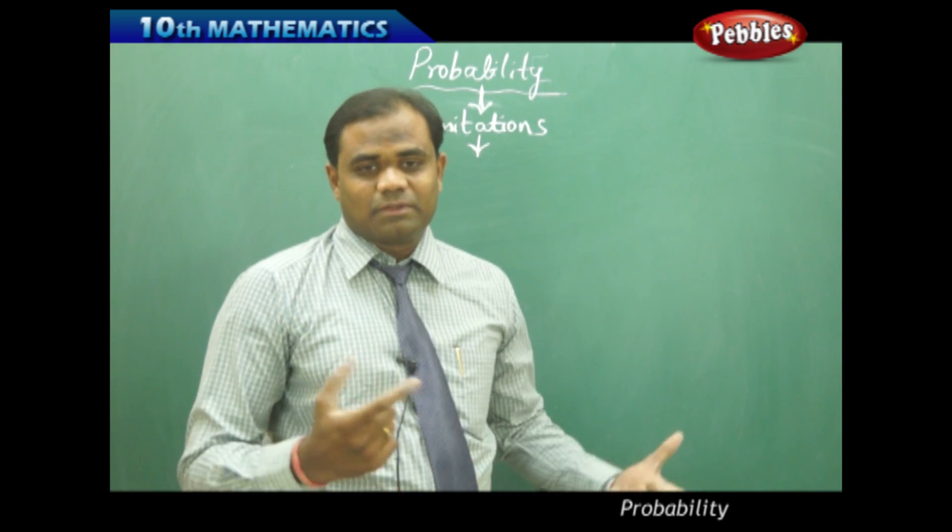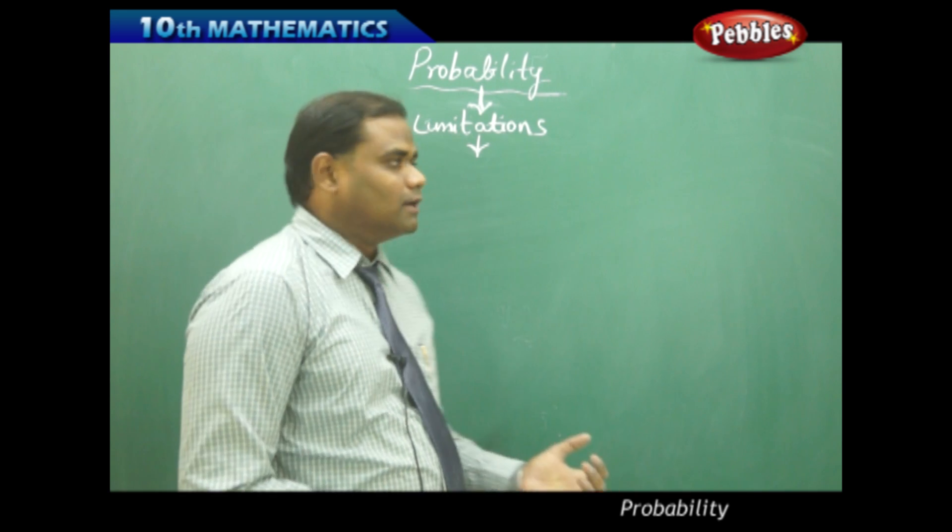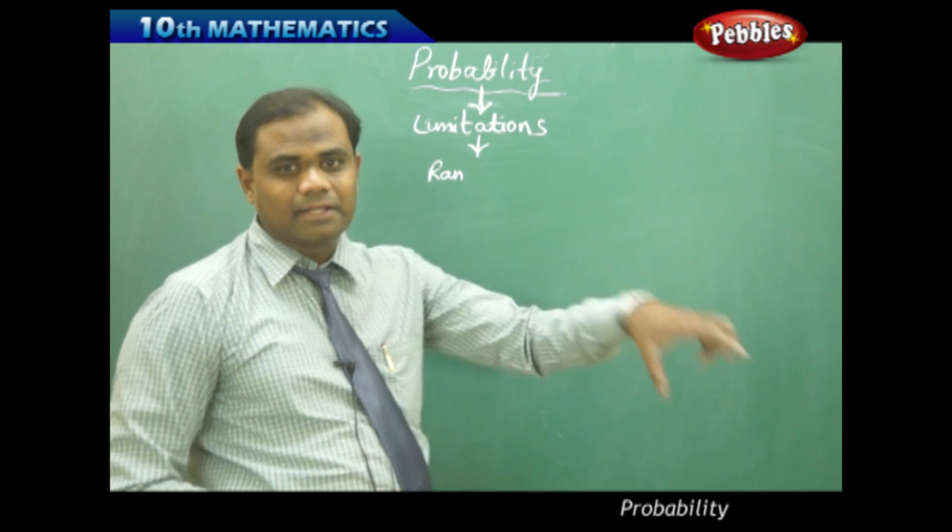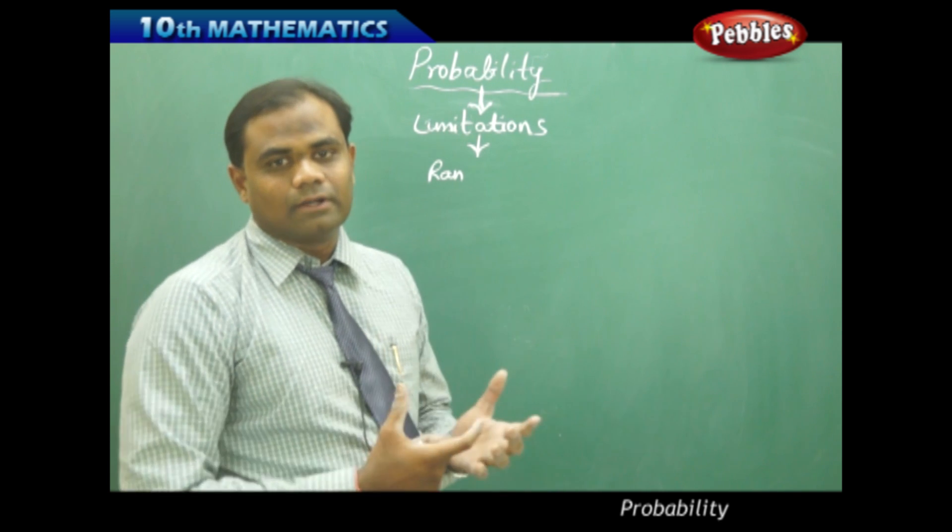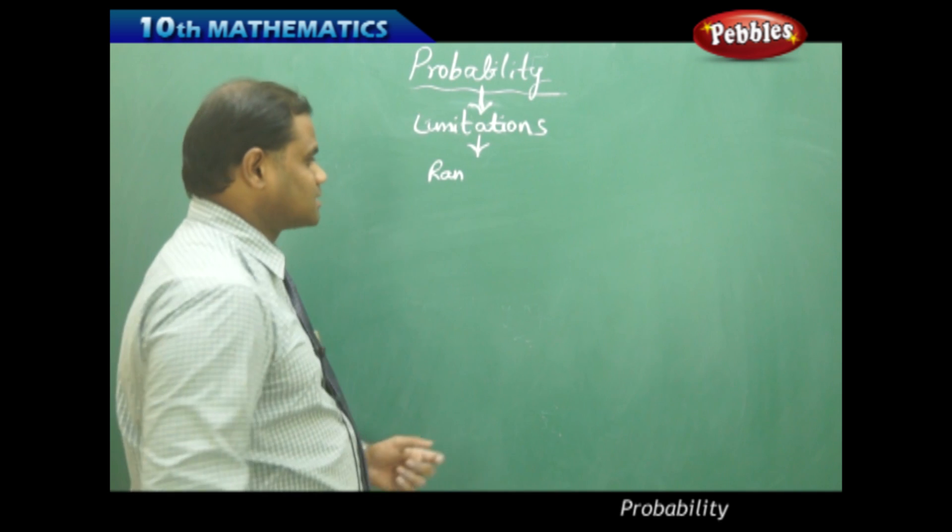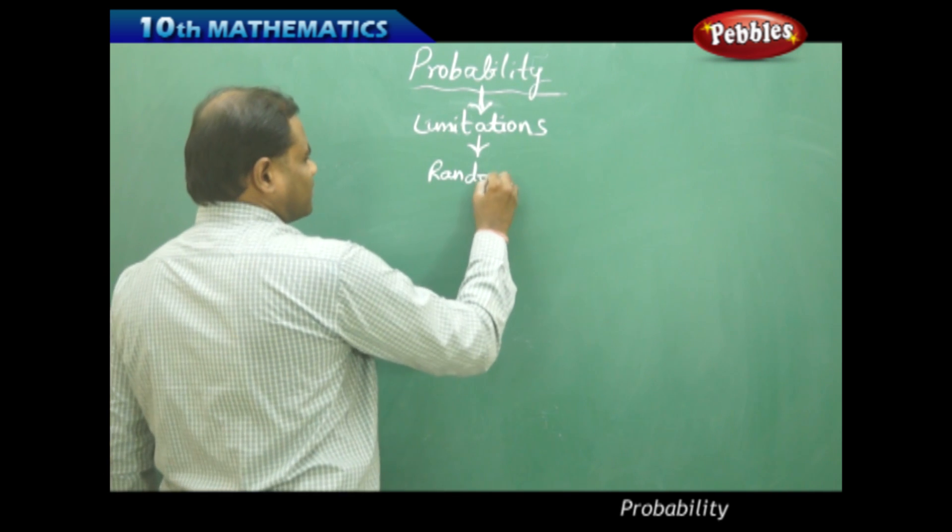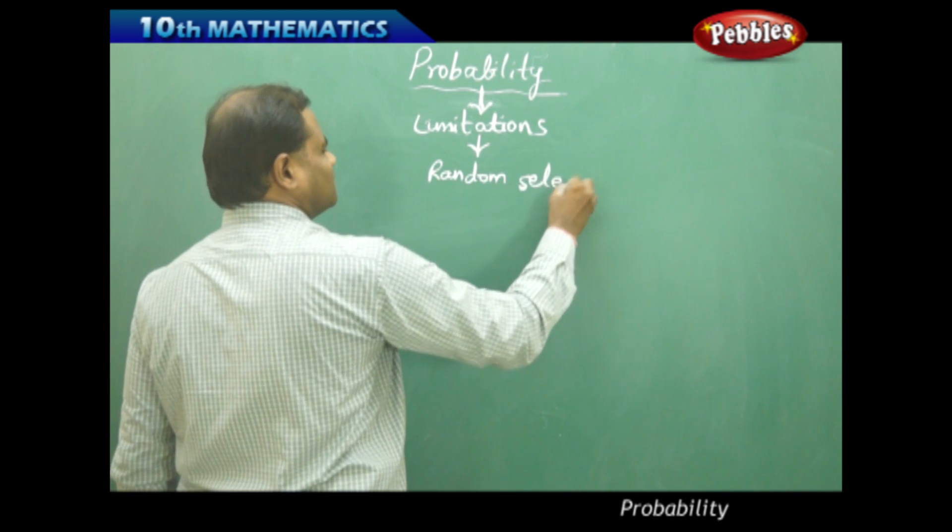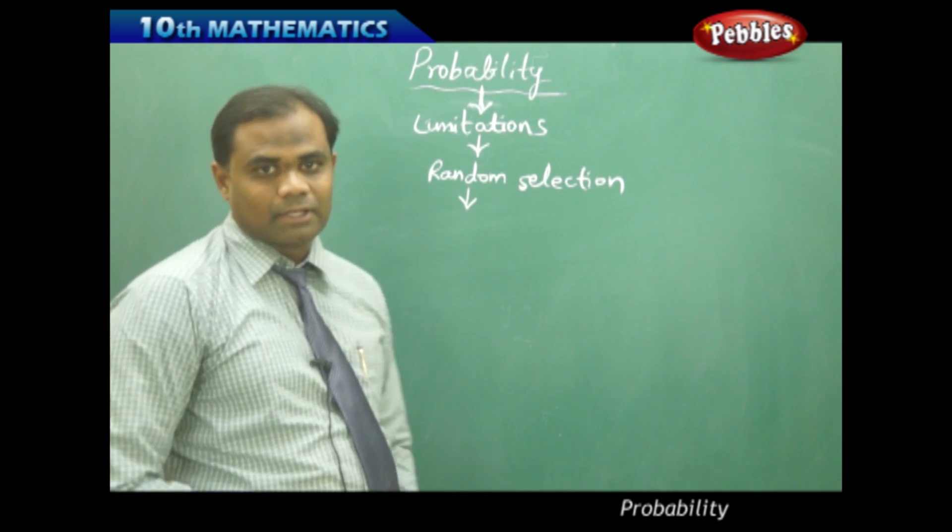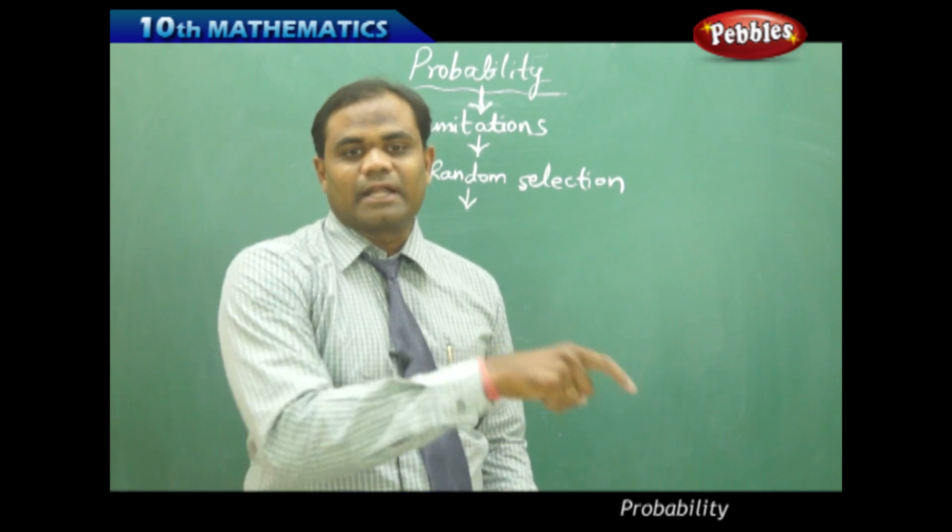Usually in many problems, we use the term random selection - a ball is picked randomly. What does random mean in mathematics or probability? This plays a very important role in random selection, because for any probability to happen in its trueness, we need to randomly select.